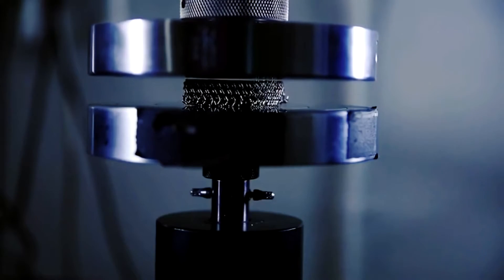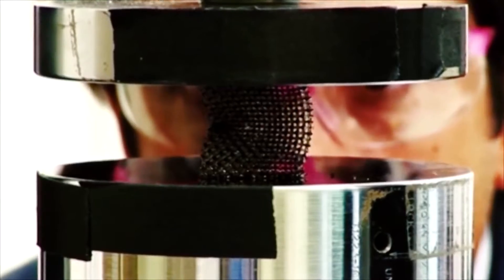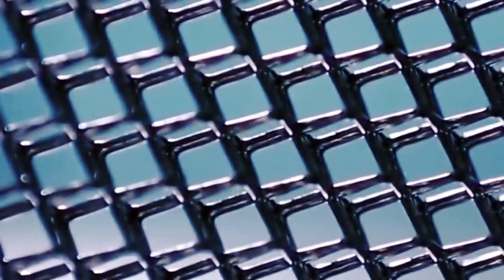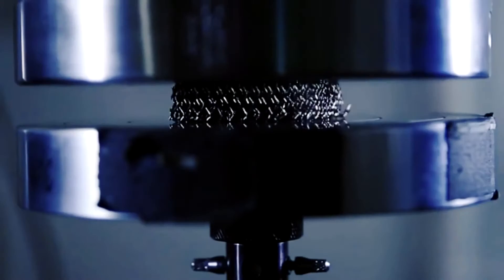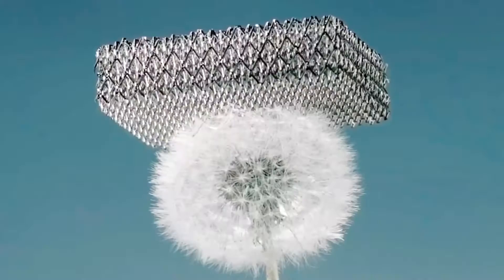American scientists from the R.H.L. lab of the University of California have created a metallic micro-lattice. The metal is so light that a piece of it can be supported by a dandelion seed head. It is claimed to be one of the lightest structural materials known to science.